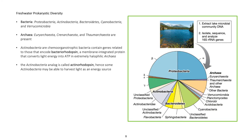Freshwater prokaryotic diversity: Bacteria include Betaproteobacteria, Actinobacteria, Bacteroidetes, Cyanobacteria, and Verrucomicrobia. Archaea include Euryarchaeota, Crenarchaeota, and Thaumarchaeota. Actinobacteria are chemo-organotrophic bacteria that contain genes related to those encoding bacteriorhodopsin — a membrane-integrated protein that converts light energy into ATP in extremely halophilic archaea. The actinobacteria analog is called actinorhodopsin; hence, some actinobacteria may be able to harvest light as an energy source.